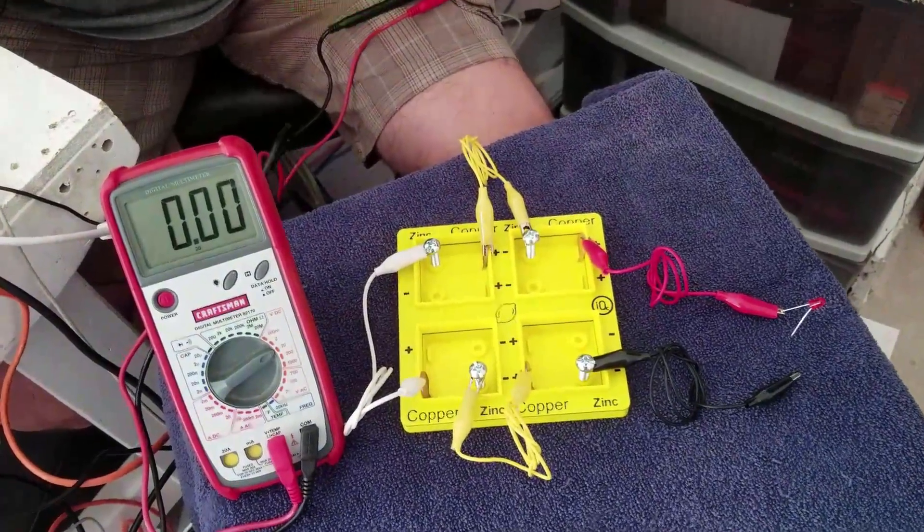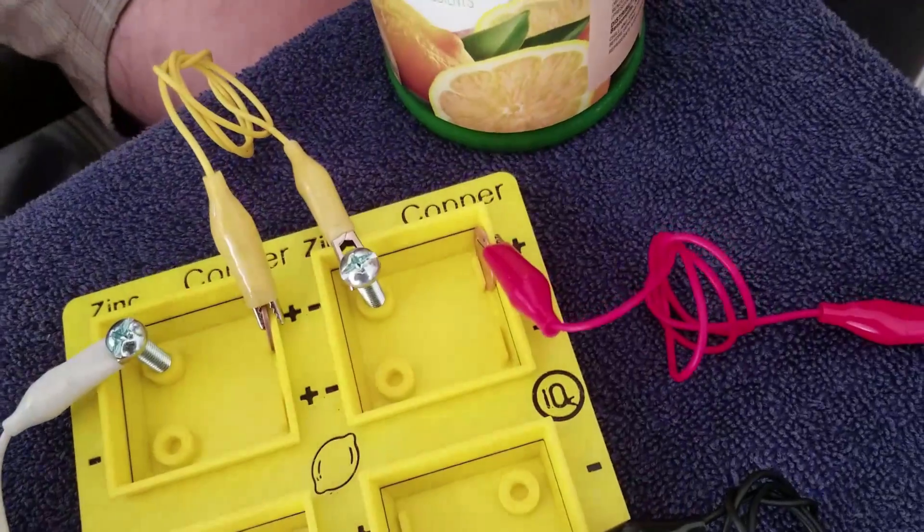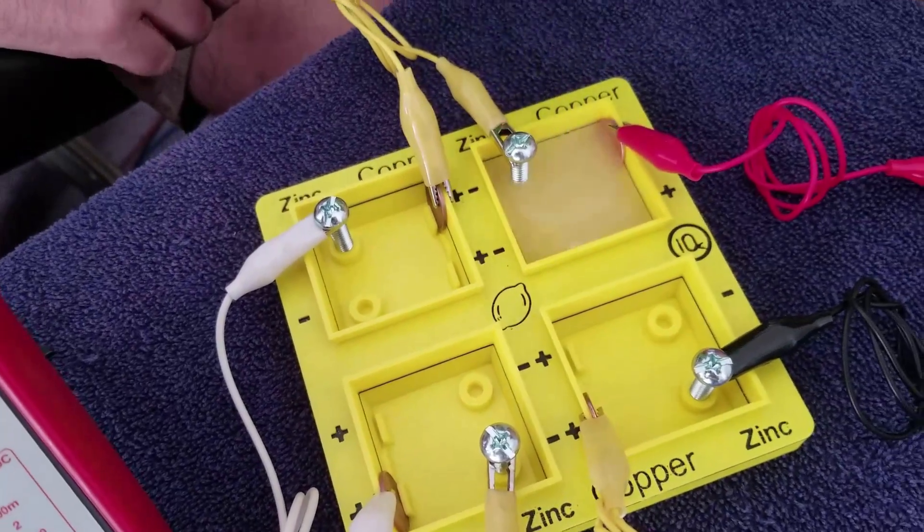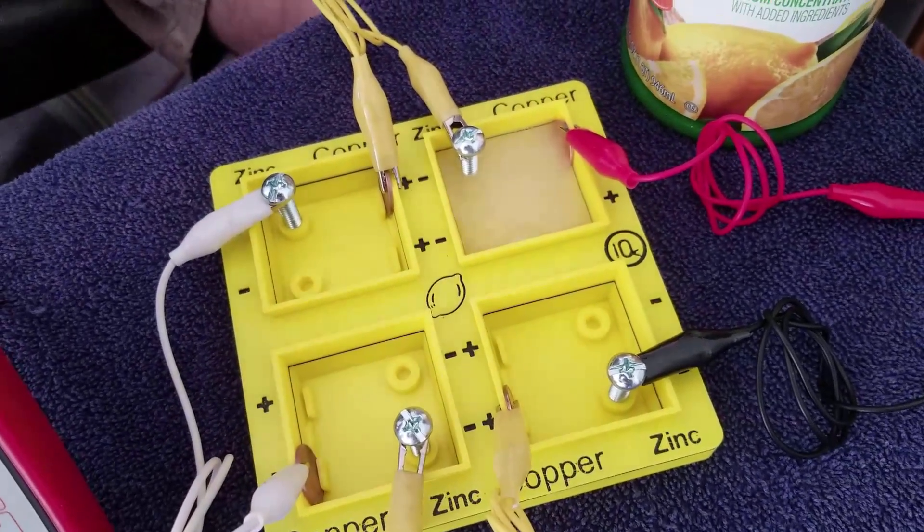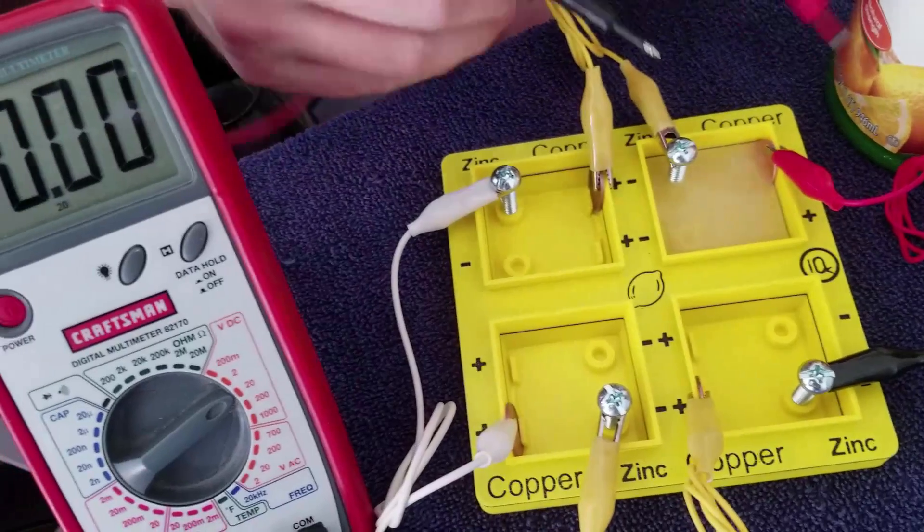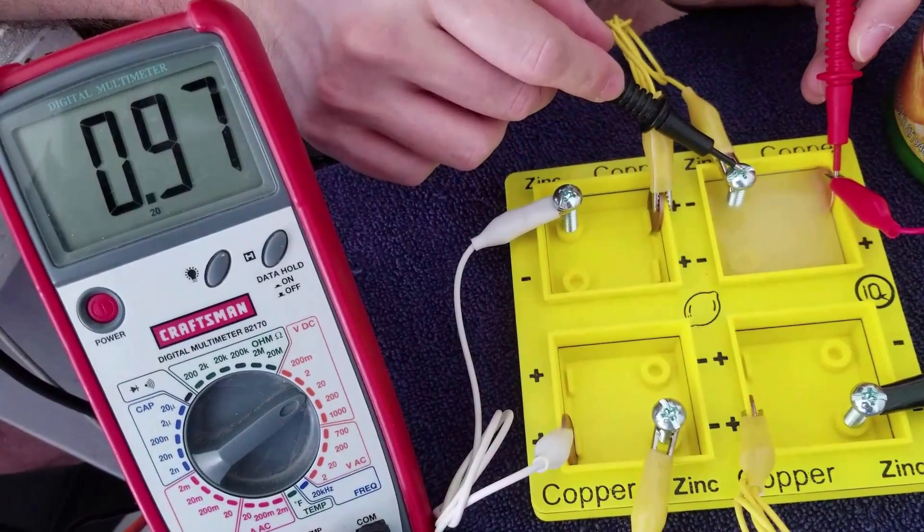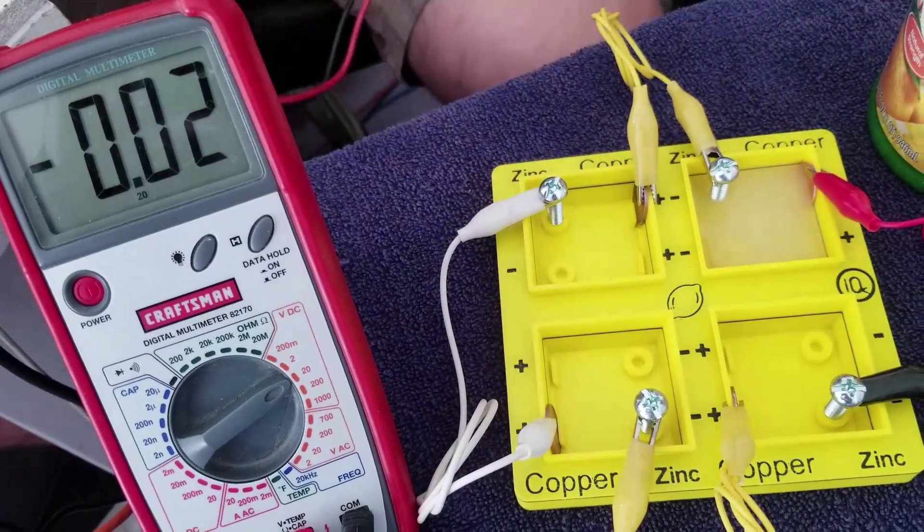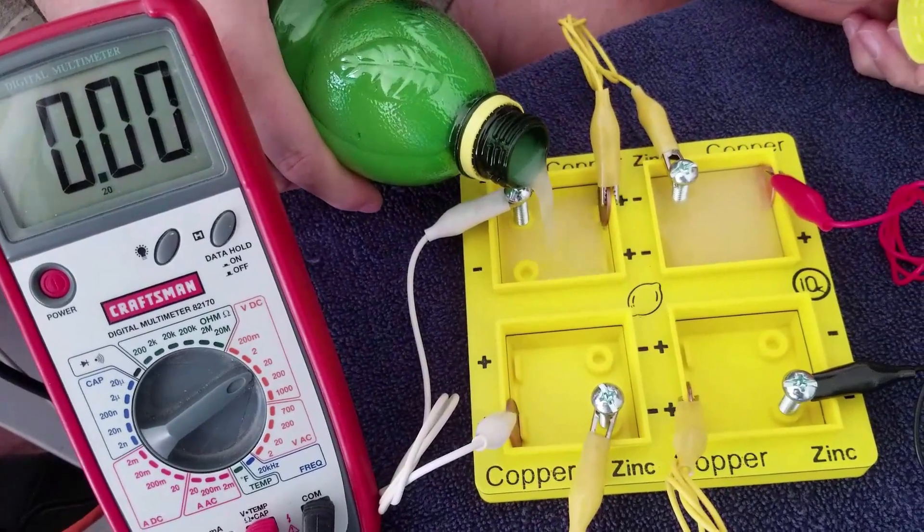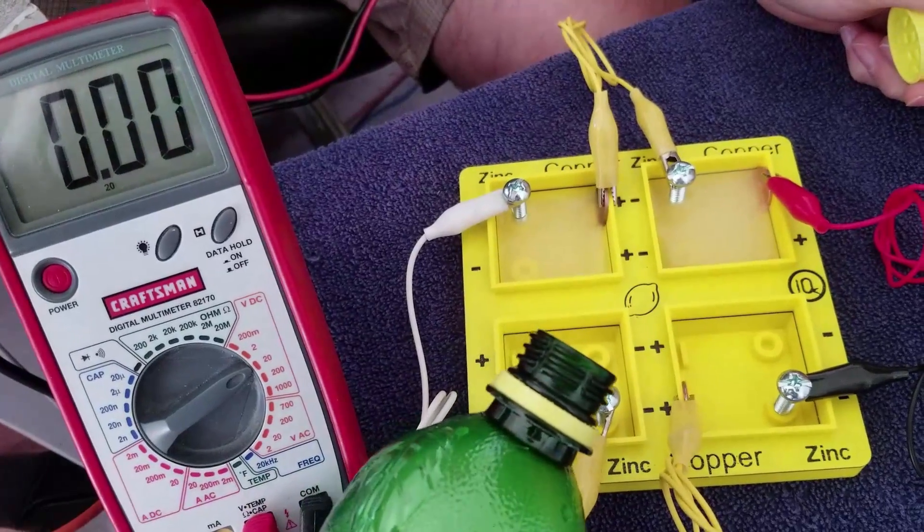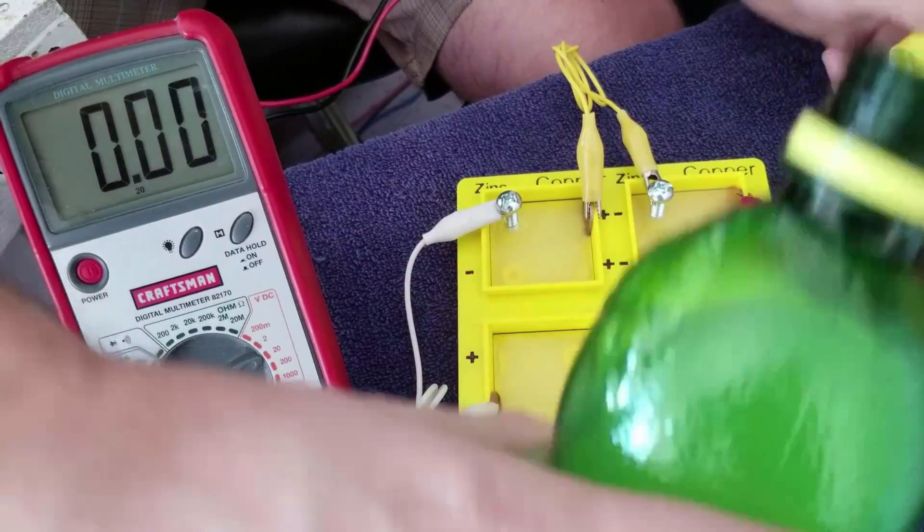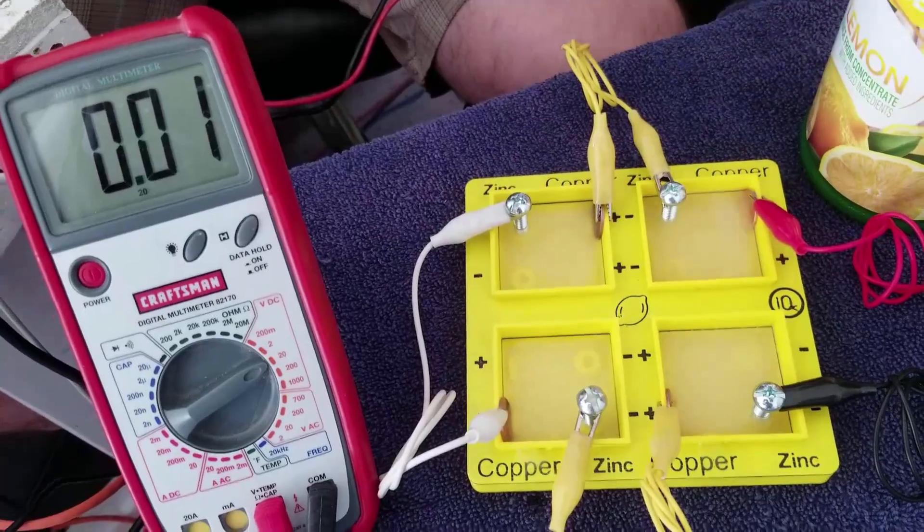But if I take some lemon juice, which I got at the store, this is just generic lemon juice. There you go. Kind of overfilled that one. Now, only that one's going. So if I hit here, I should have about 0.97 volts. Hooray. So now I will fill up the rest. And this is not a lesson plan on how this works or the chemical reaction. I'm not doing that. This is just how you get this to physically work. How do you use this? In your own class, you can teach all the particulars.